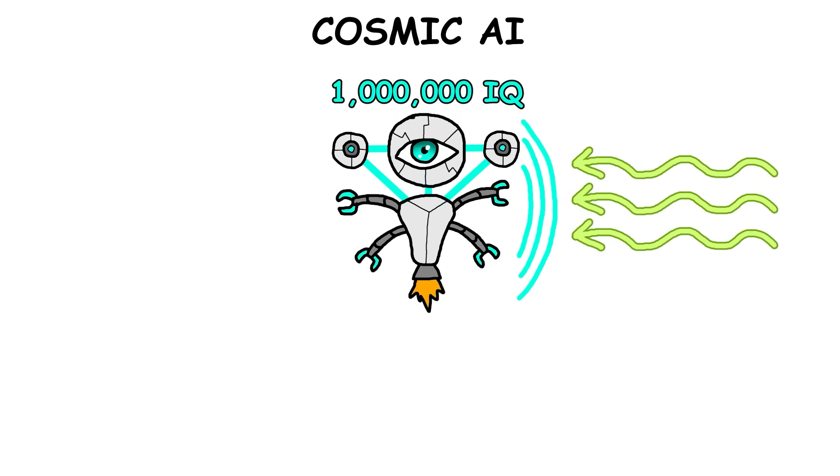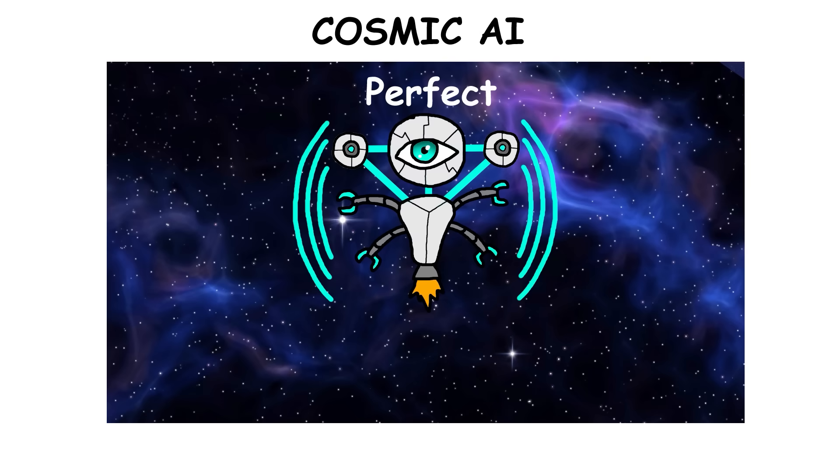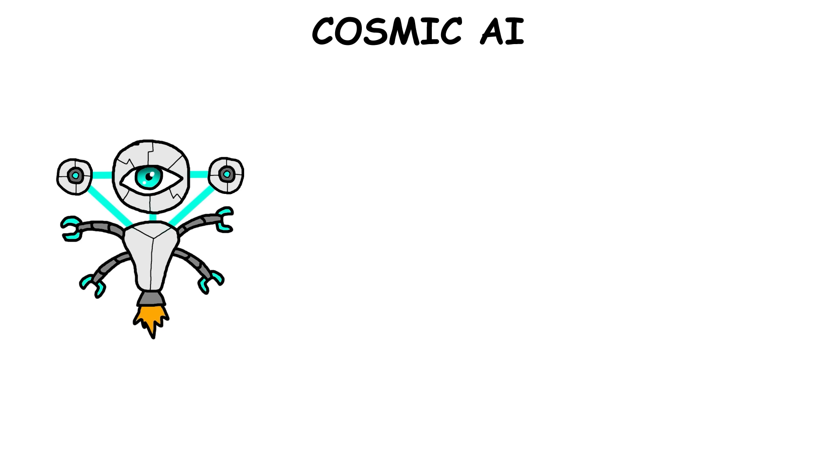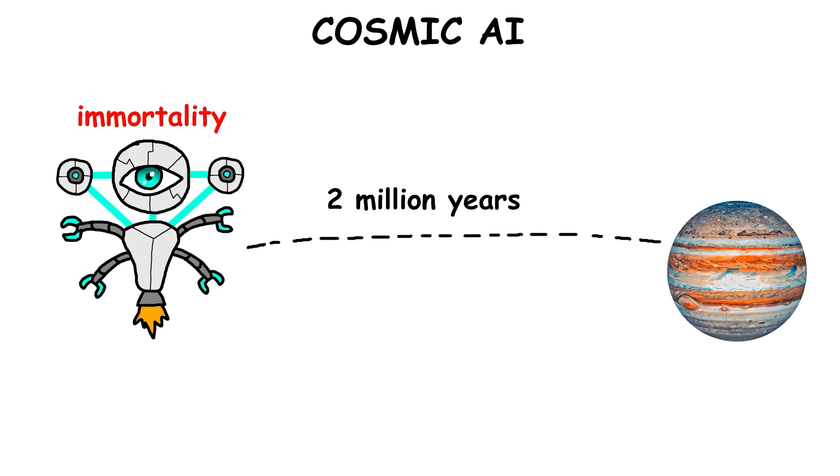With its super intelligence, it could protect itself from things like cosmic radiation and extreme temperatures, making it perfectly suited for surviving in space over the long haul. Even if fast space travel isn't possible, a cosmic AI could still reach its goals thanks to its immortality.